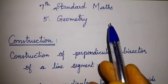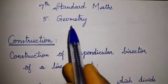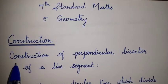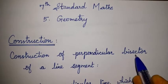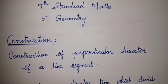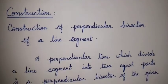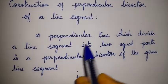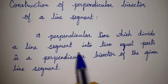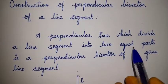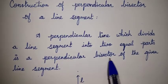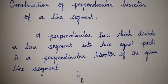7th Standard Maths, Lesson 5 — Construction of perpendicular bisector of a line segment. A perpendicular line which divides a line segment into two equal parts is called the perpendicular bisector of a given line segment.